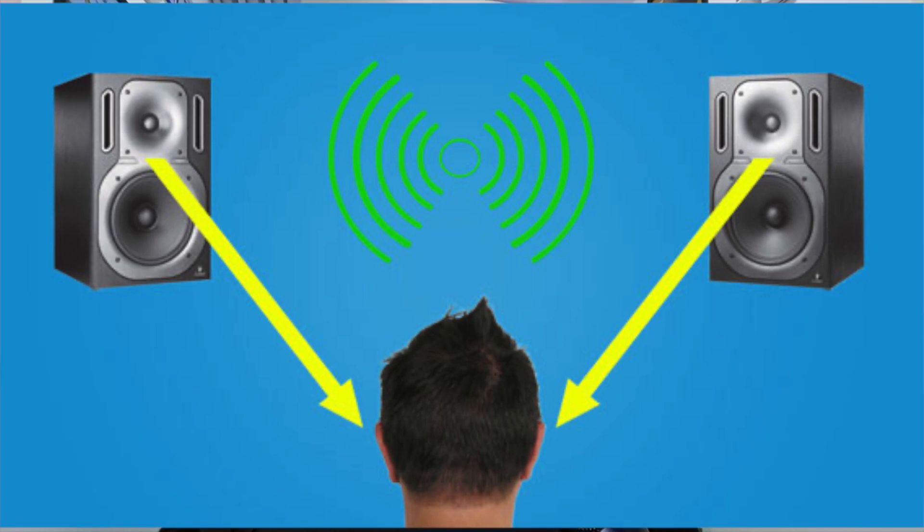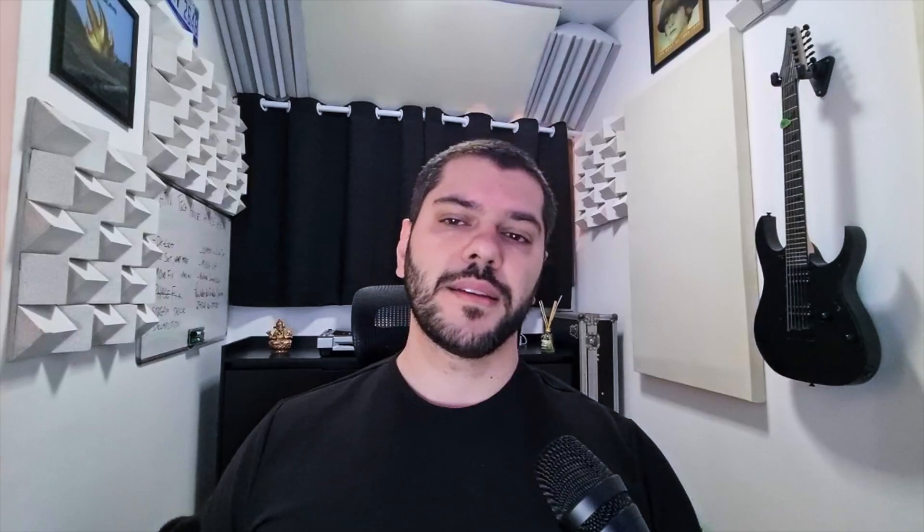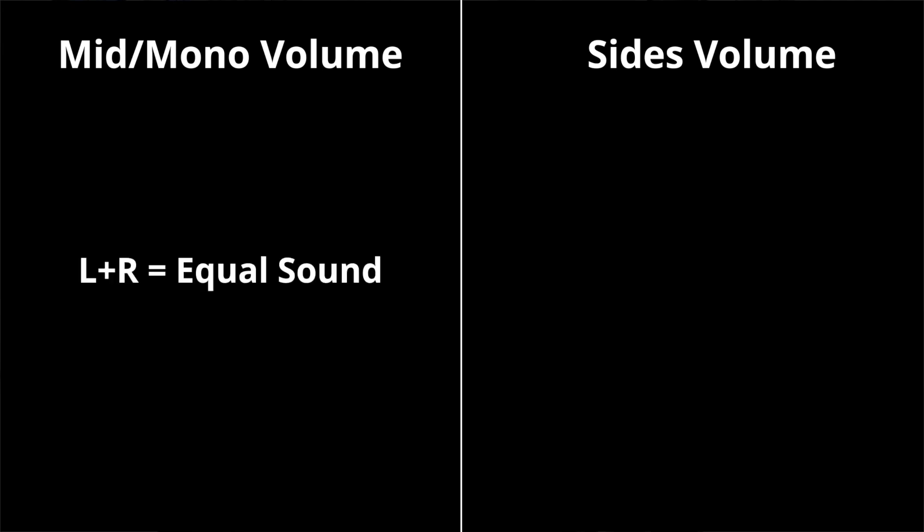First of all, you need to understand how stereo works. The sense of stereo we get from stereo audio is due to the difference between the left and right audio channels. When our brain perceives a difference between left and right, we feel like we are listening to sounds more separately — meaning wider. We need to separate our sound in two: mid (or mono) volume and sides volume. Equal sounds between left and right are mono, and the differences between them are the sides.